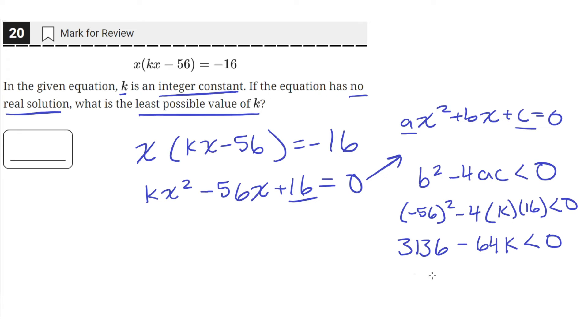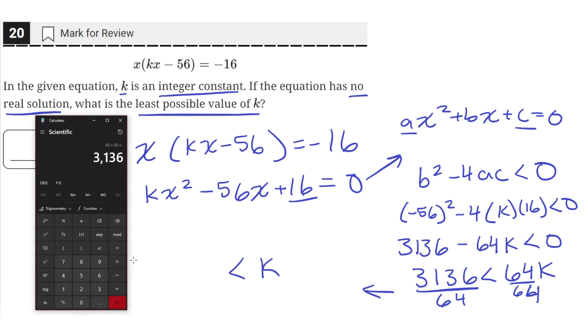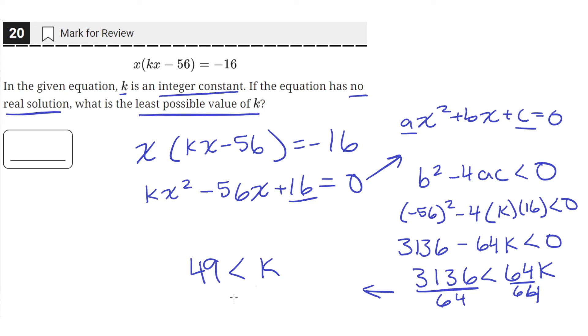Now we can solve for a value of k. Let's move the negative 64k to the other side, so we'll be left with 3136 is less than 64k. Then let's divide both sides by 64 to get k isolated. So when we divide both sides by 64, we'll be left with just k on the right side. And 3136 divided by 64 equals 49.